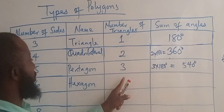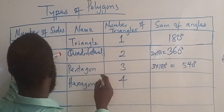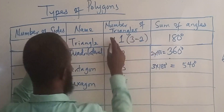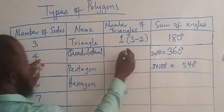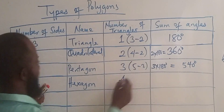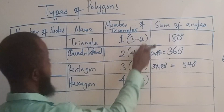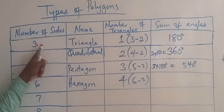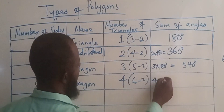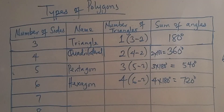Six sides is called a hexagon. Following the same pattern, a hexagon will have four triangles. Notice the pattern: number of sides minus two gives the number of triangles — three minus two is one, four minus two is two, five minus two is three, six minus two is four. So the sum of angles in a hexagon is 4 multiplied by 180 degrees, which gives 720 degrees.